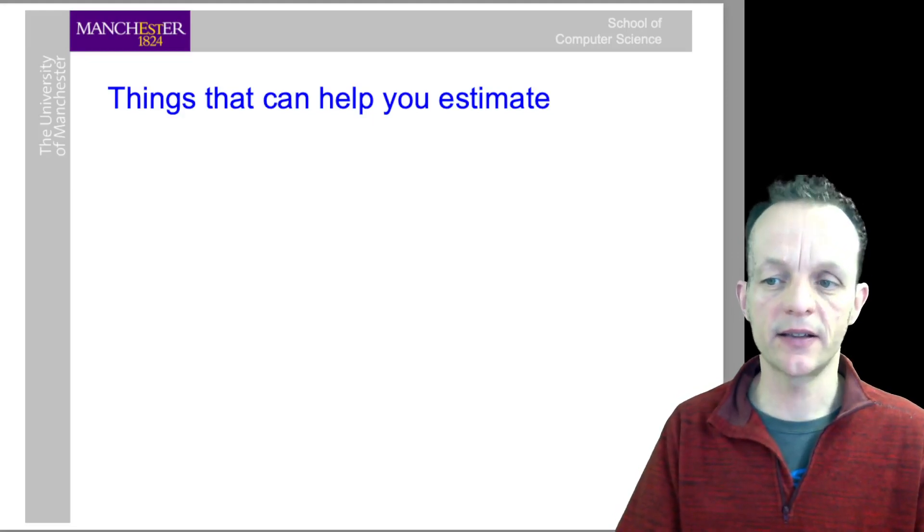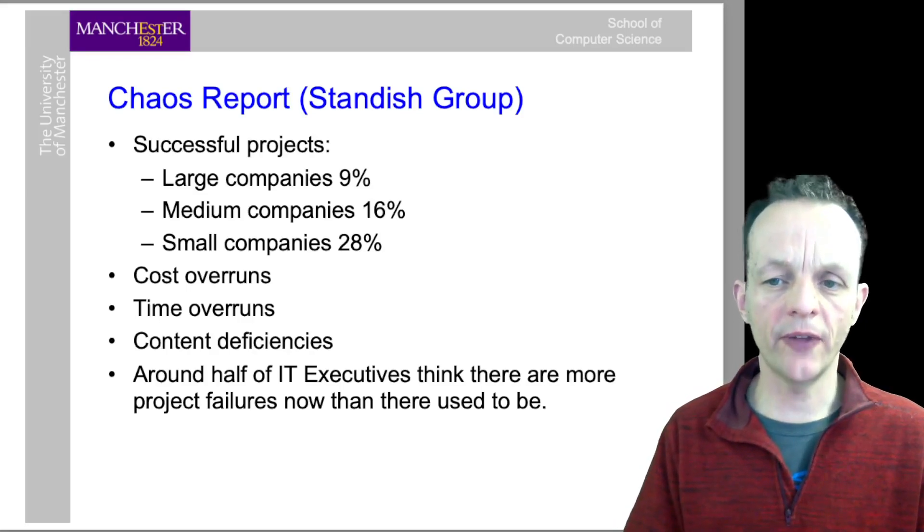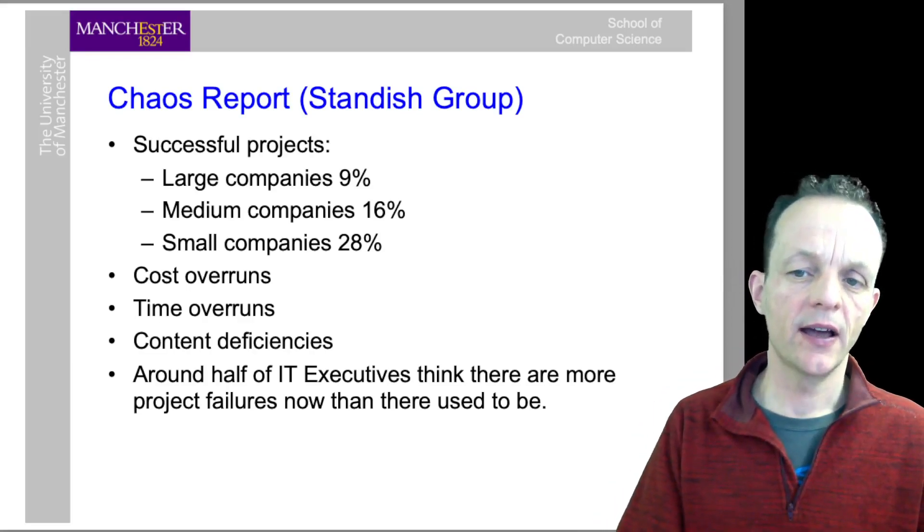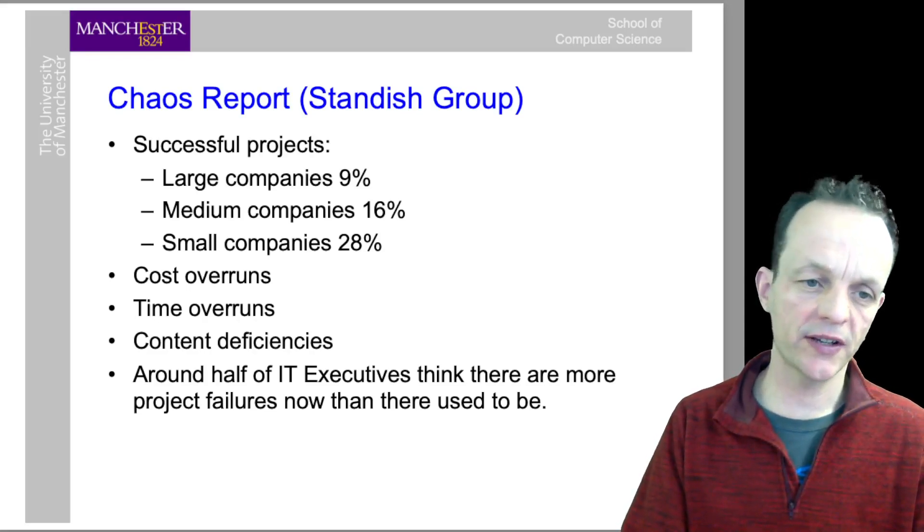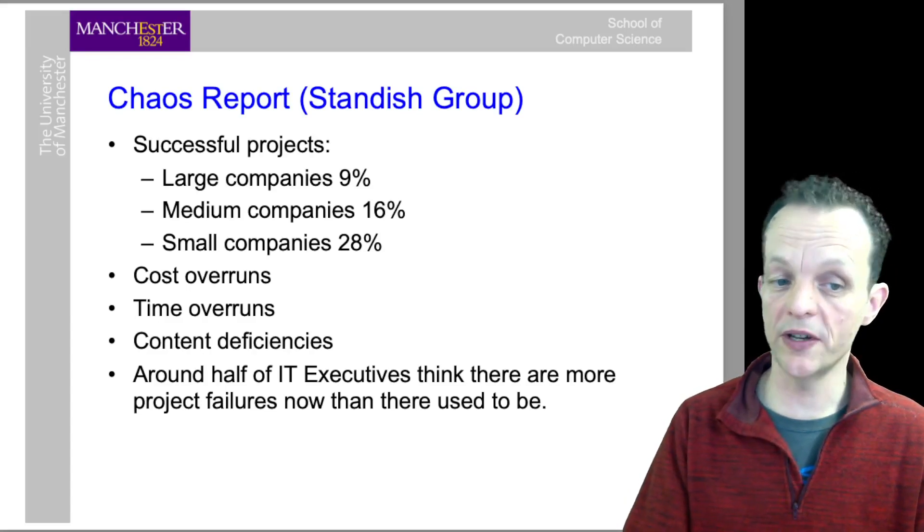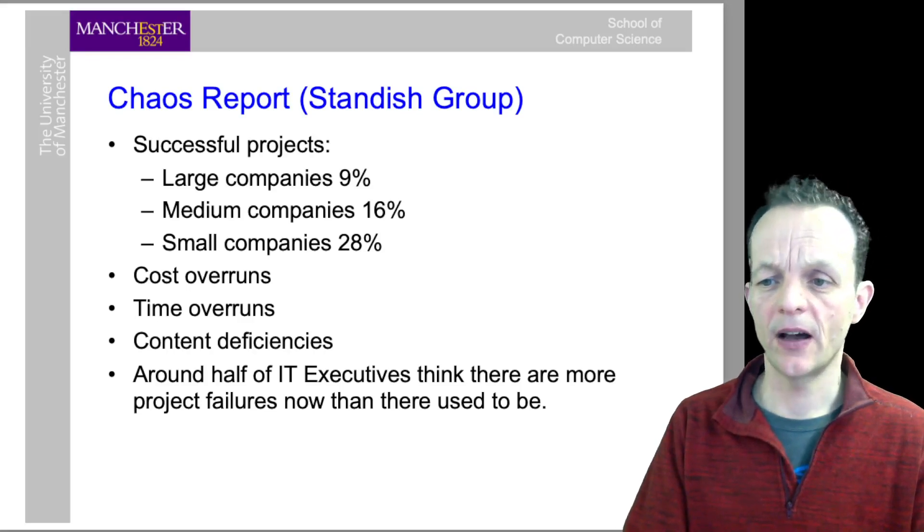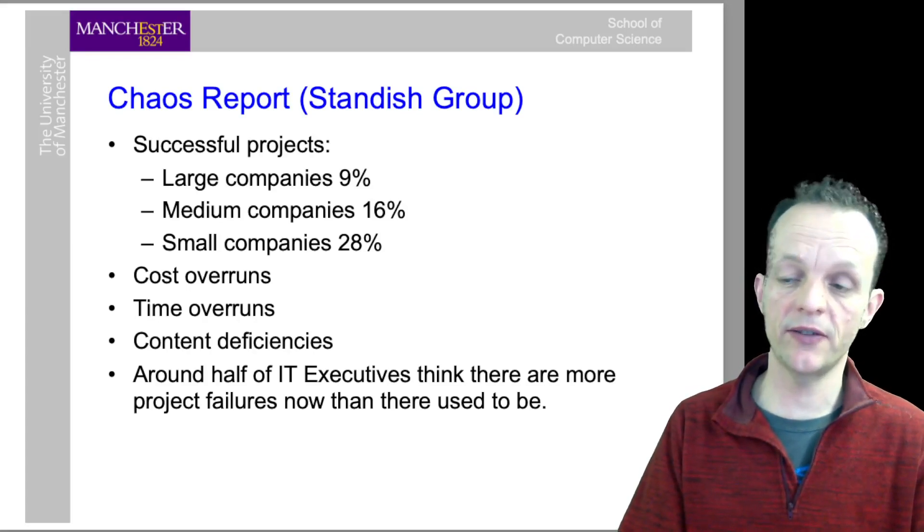To round off, the Chaos Report produced by the Standish Group estimates that successful projects in large companies - less than 9% of large companies have successful IT projects. In medium companies 16%, and smaller companies 28%. But still only 28% of IT projects are considered successful in small companies. That's because of cost overruns, time overruns, and content deficiencies.